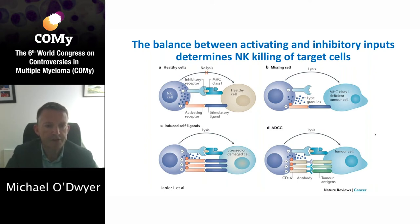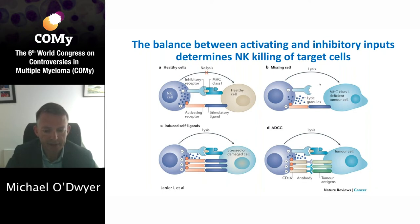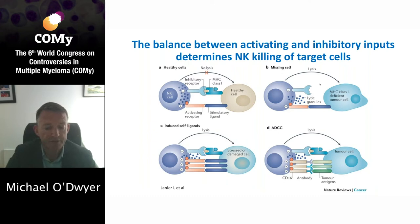Inhibitory receptors, such as the KIR receptors, which recognize MHC class 1 molecules, prevent killing of healthy cells by NK cells. Loss of MHC class 1 molecule expression, as you can see on the top right, which is a common occurrence in cancer cells enabling evasion of T cells, reduces inhibitory signaling and shifts the balance towards activation, resulting in killing of target cells by NK cells.